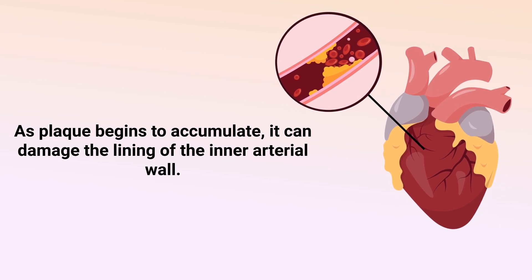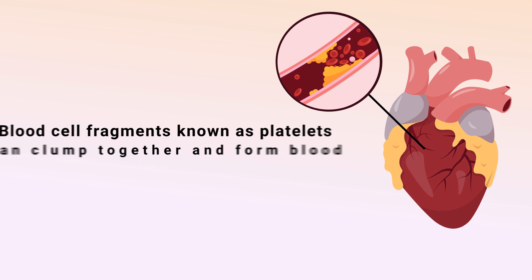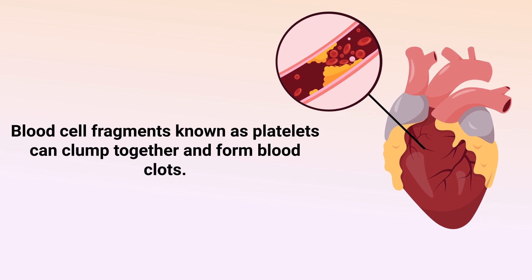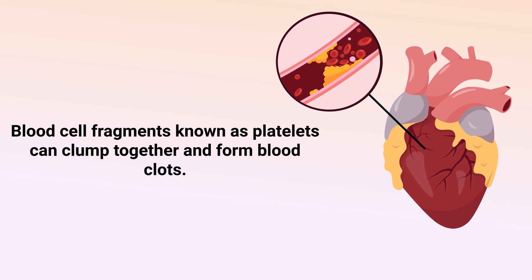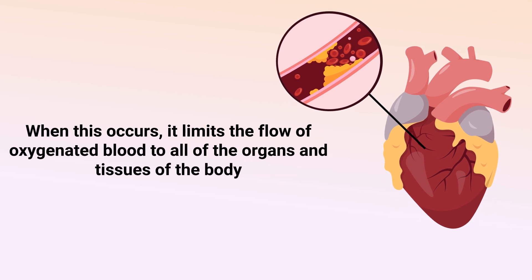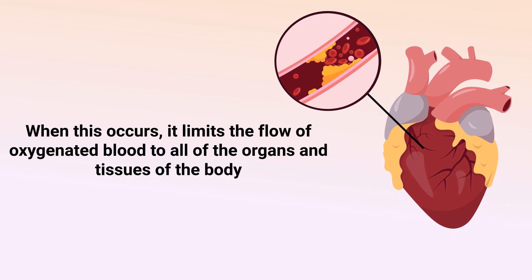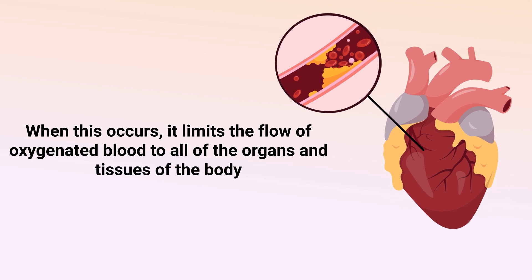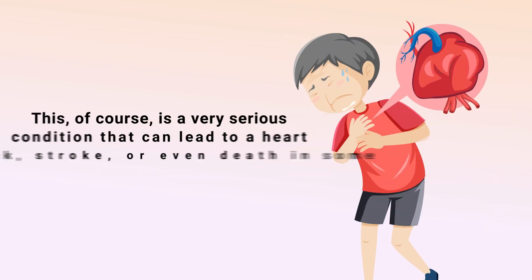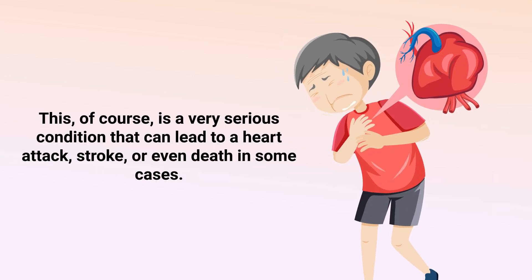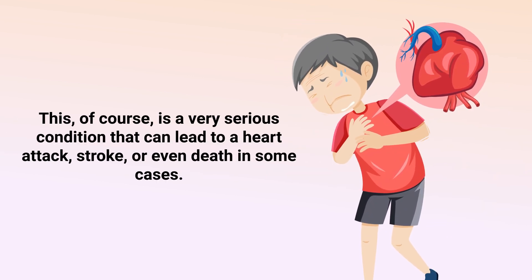it can damage the lining of the inner arterial wall. Then blood cell fragments known as platelets can clump together and form blood clots. When this occurs, it limits the flow of oxygenated blood to all of the organs and tissues of the body.